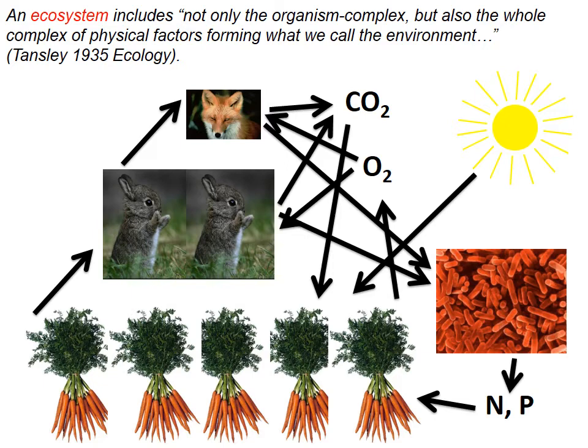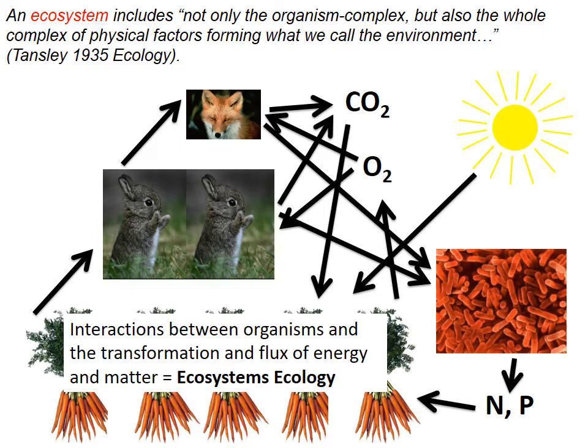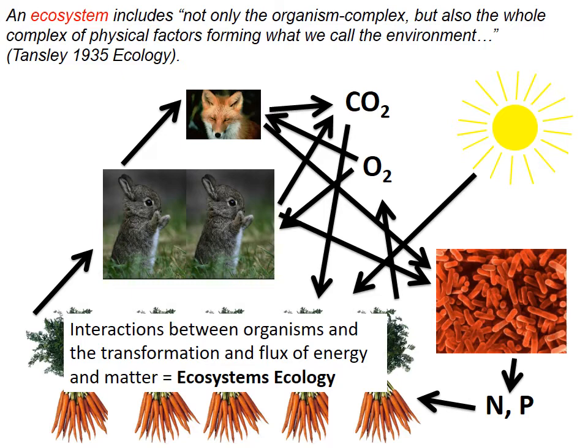Adding further complexity makes this ecosystem ecology. An ecosystem was first defined in the early 20th century by ecologist Tansley. He said an ecosystem includes not only the organism complex — the community of interacting species — but also the whole complex of physical factors forming the environment. So it includes all the species and their interactions with the surrounding environment: breathing, producing wastes, absorbing nutrients from soil, bacteria breaking down dead things back into chemicals for plants, and the sun supplying energy. All of those processes, transformations, and flux of energy and matter are part of ecosystem ecology.